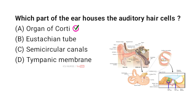The organ of Corti is located in the cochlea of the inner ear. It houses the auditory hair cells that detect sound. When sound waves pass through the cochlea, the hair cells move. This movement creates signals that are sent to the brain, which then interprets these signals as sound.